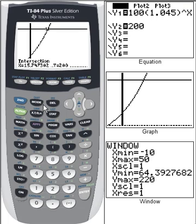And the intersection is 15.747302 for the input. So that means at 15.747 years, it's going to take for our $100 to double.